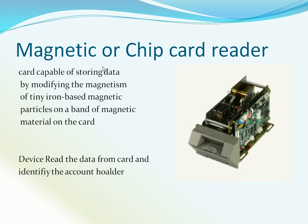The next component is the Magnetic or Chip Card Reader. This card is capable of storing data by modifying the magnetism of tiny iron-based magnetic particles on a band of magnetic material on the card. From this image, you can clearly identify the magnetic chip card reader. The device reads the data from the card and identifies the account holder.